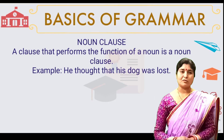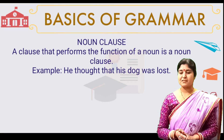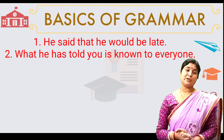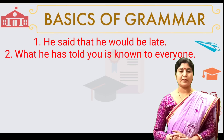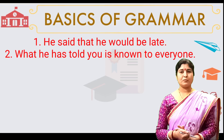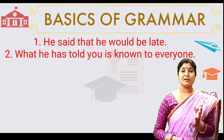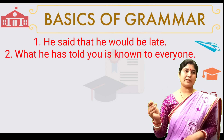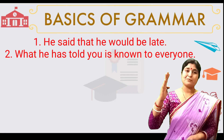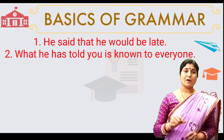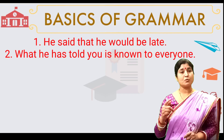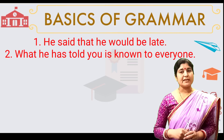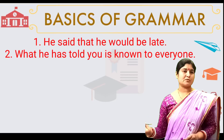So what is a Noun Clause? A clause that performs the function of a noun in a sentence is known as the Noun Clause. For example, 'He said that he would be late' — here 'that he would be late' is used as the object in the sentence. Another example: 'What he has told you is known to everyone' — here it is used as the subject in the sentence. So a Noun Clause can be used as the object or as the subject.